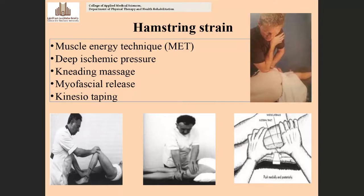In summary, the lecture covered four acute soft tissue injuries in the lower extremity: ankle sprain (three types: inversion, eversion, and high ankle sprain), anterior cruciate ligament injury (with conservative and surgical management), Achilles tendon injury, and hamstring strain. Thank you.